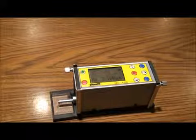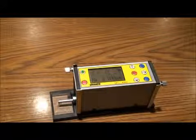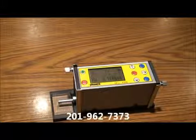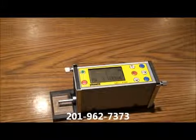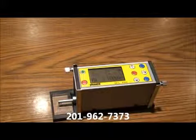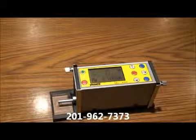This concludes our application and function guide for the Phase 2 SRG 4500 surface roughness tester. If you have any questions, please don't hesitate to contact Phase 2 at 201-962-7373.